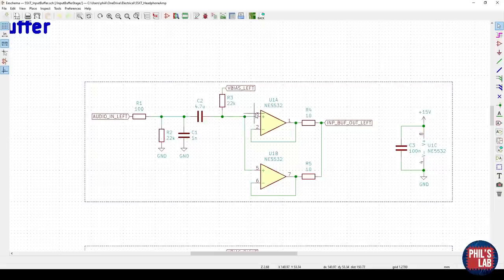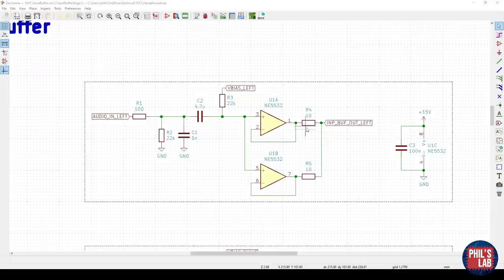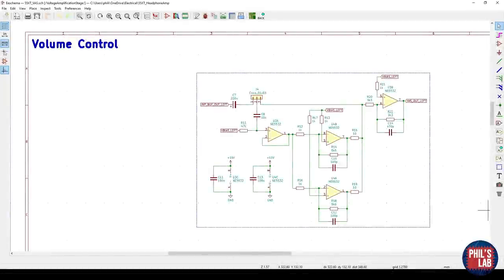C2 also prevents any DC offset at the source appearing at the op-amp inputs. Again, the use of paralleled op-amp sections is a recurring theme in this design and helps to reduce the noise and increase the load driving capabilities. The outputs of both op-amps are again combined via these 10 ohm resistors.